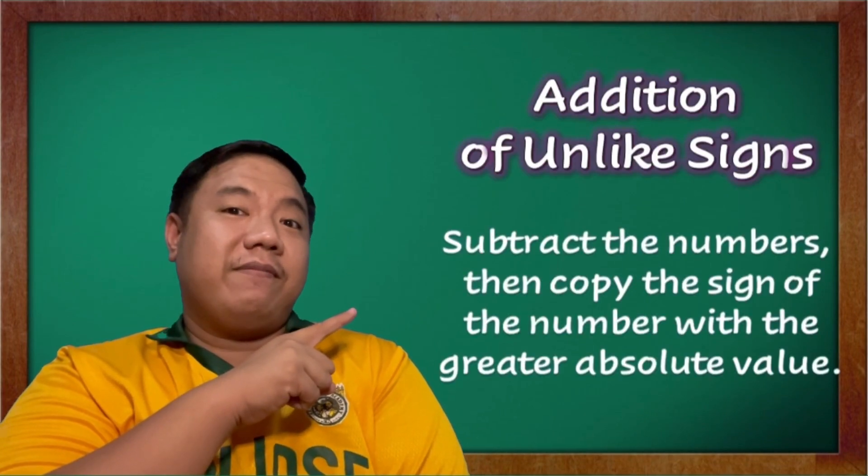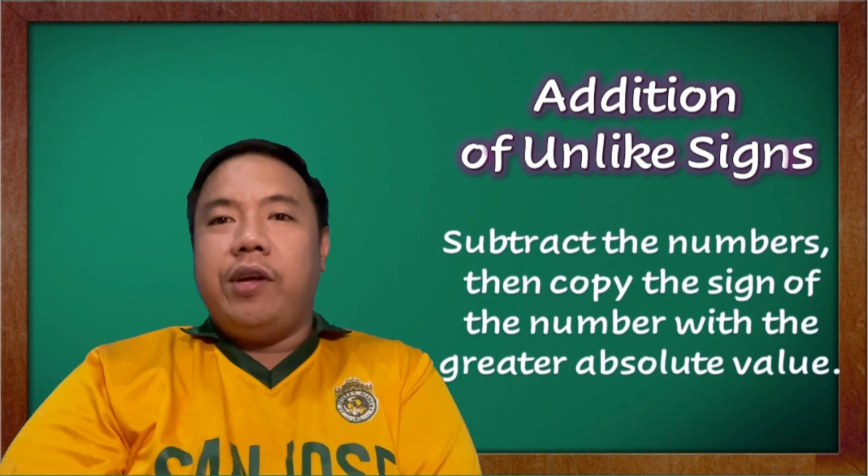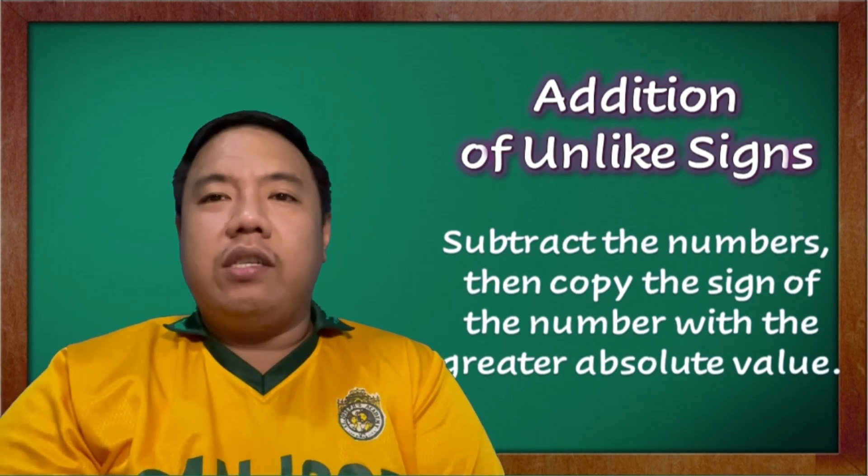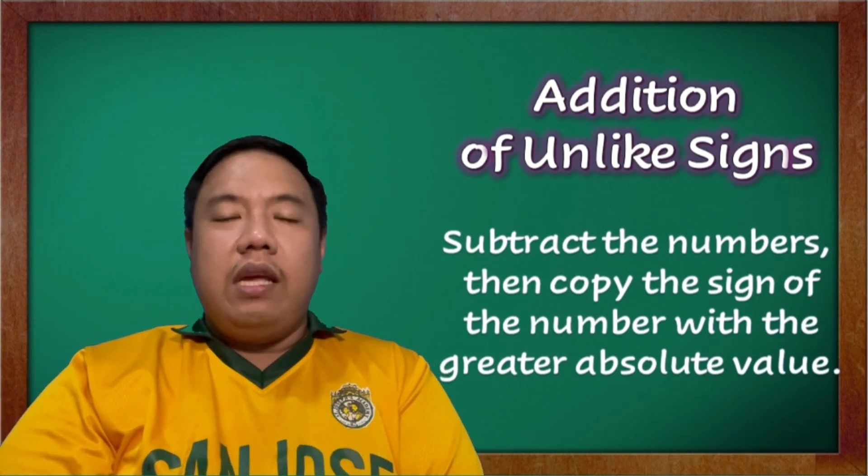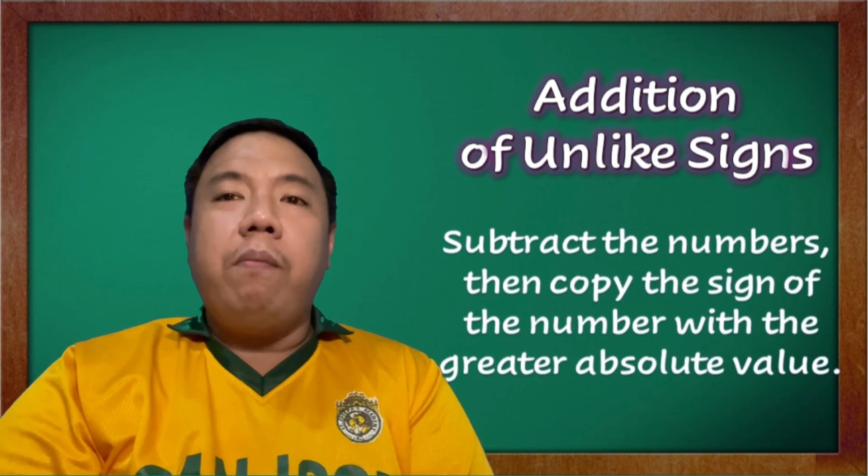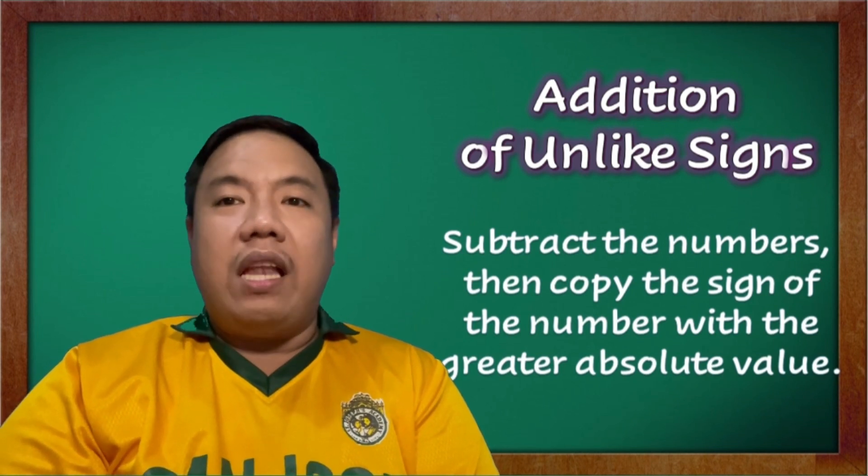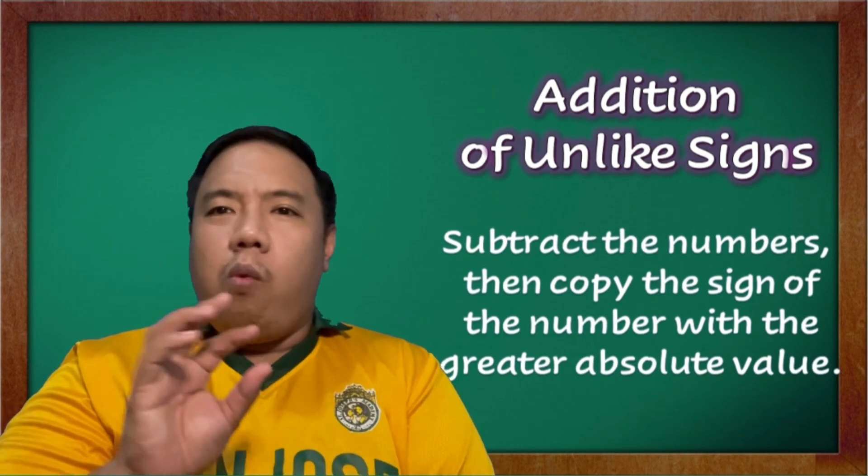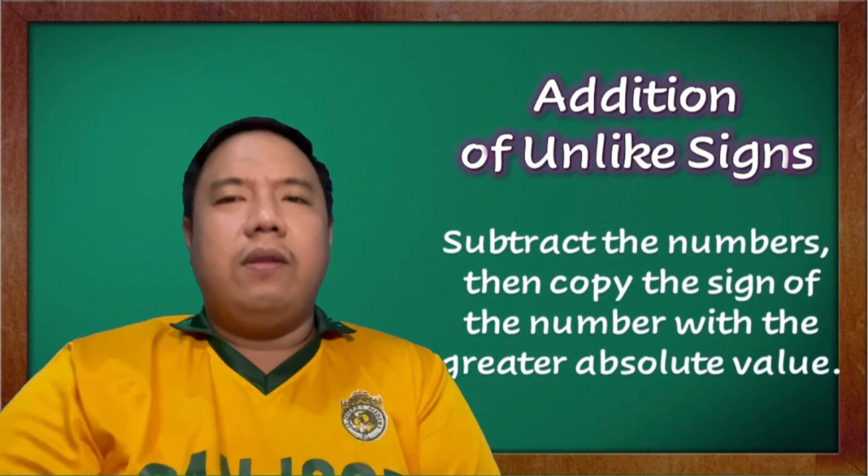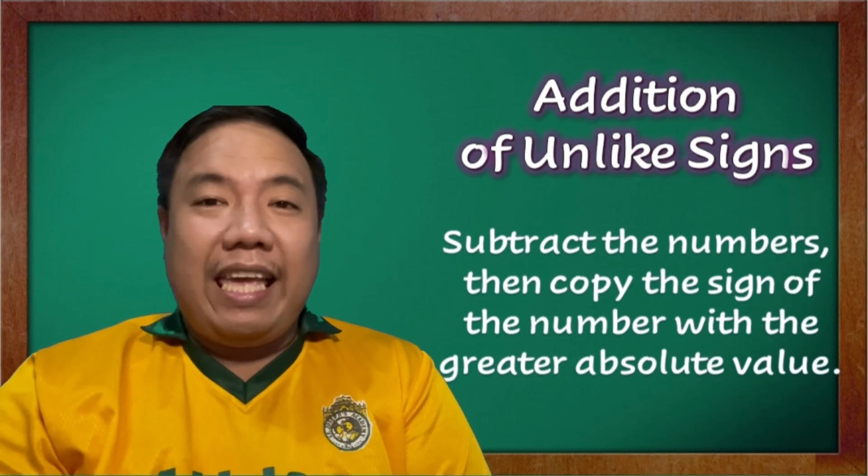How about the addition of unlike signs? What are we going to do? To add integers with unlike signs, we are going to subtract the numbers and then copy the sign of the number with the greater absolute value. Or think of it as the higher number, ignoring positive or negative. Let's test this out.